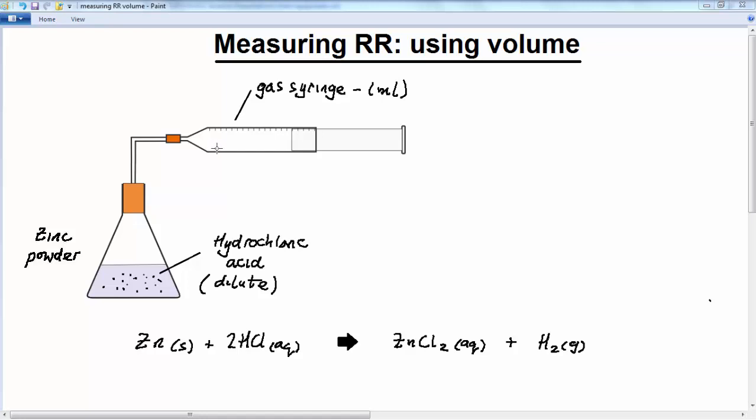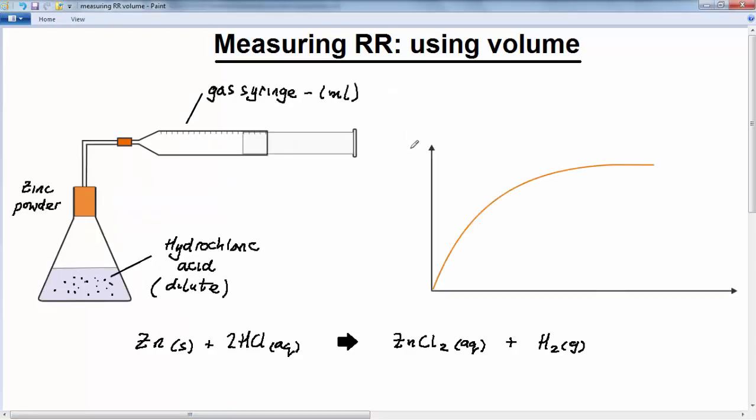That time interval might be every 10 seconds, 20 seconds, 30 seconds, or a minute, but you will measure that volume and then plot your results on a graph. And your graph will eventually look something like this, where you've got the volume in millilitres against time, and you can then use that graph to calculate the reaction rate at any given times.